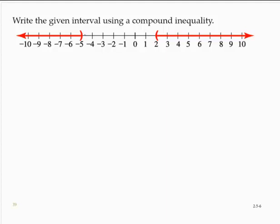Now, how we would usually write this is we write the first interval, so the numbers are less than negative 5. So we would write x is less than negative 5.